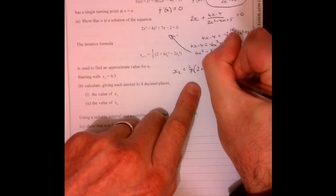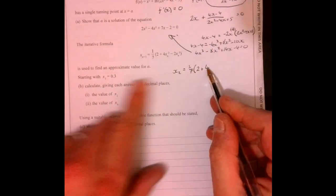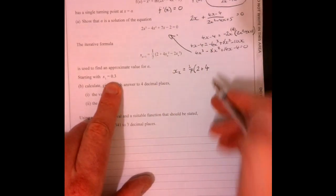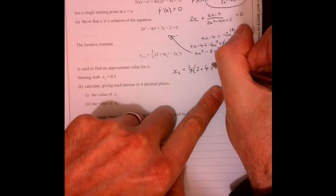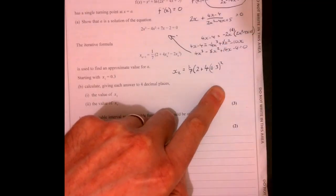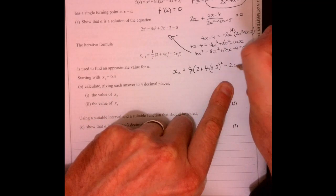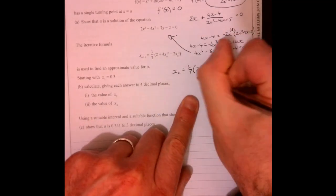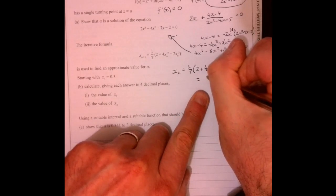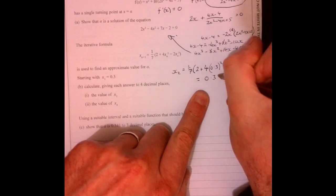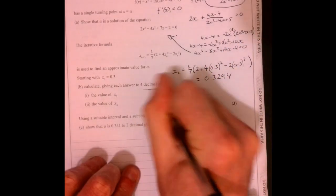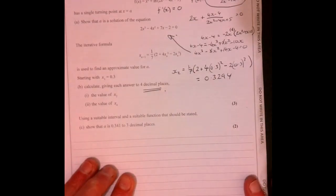So 4 multiplied by the first value that we're told just here, so 0.3 squared, and then take away 2, and then we've got 0.3 cubed. If you work that out, so x2 ends up being 0.3294. Make sure that you do the right number of decimal places.